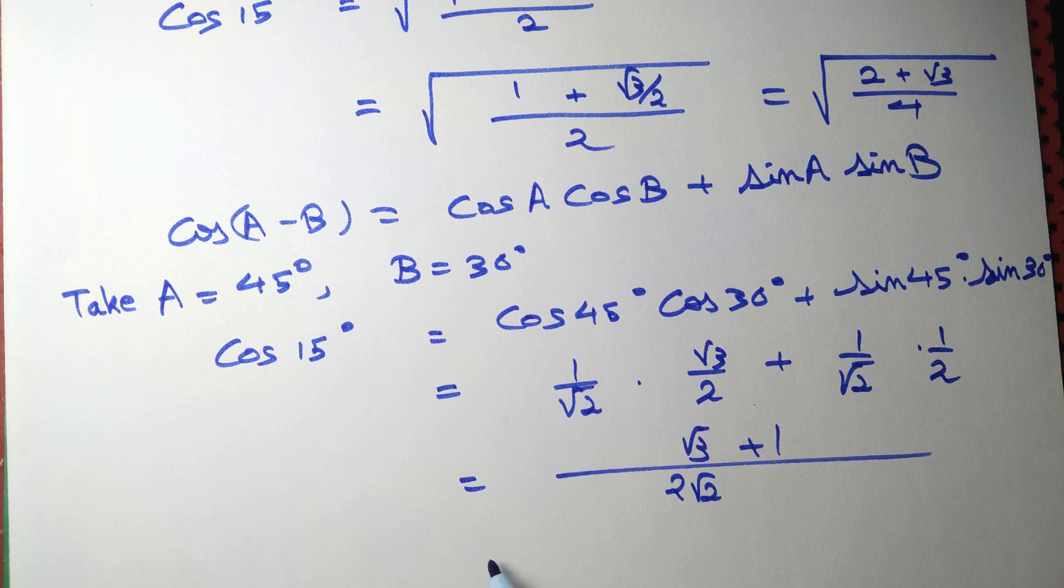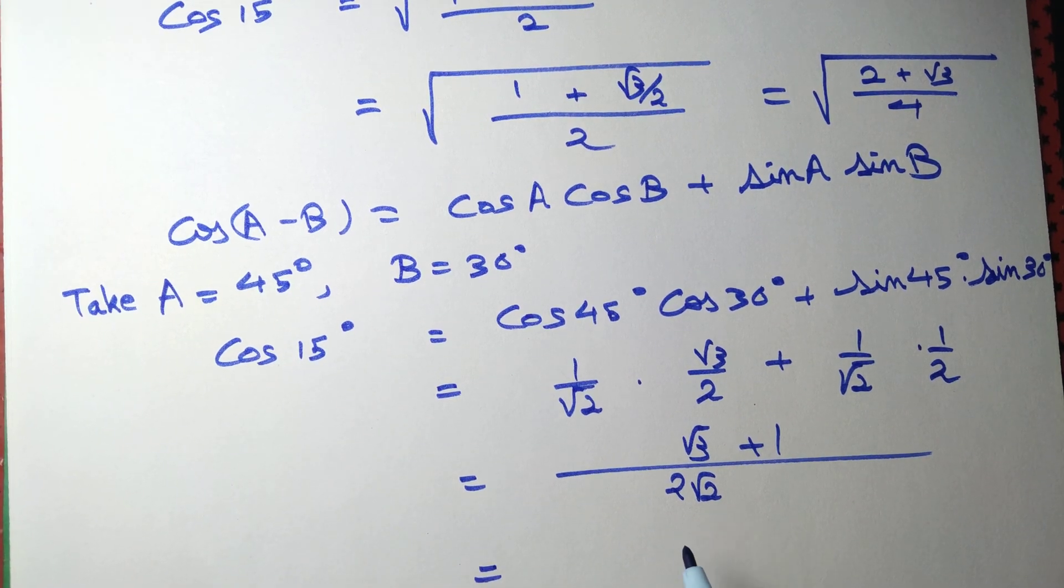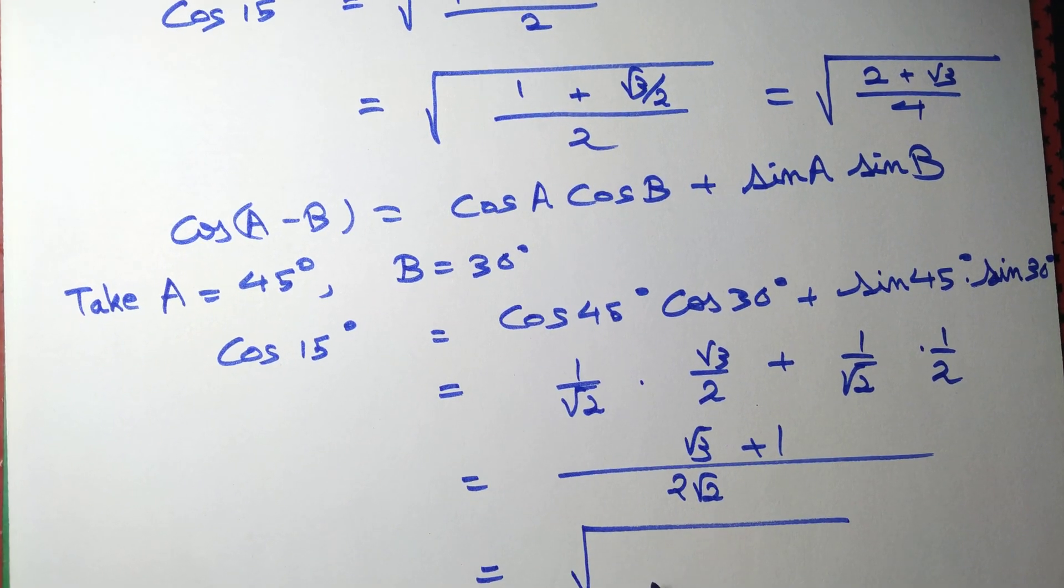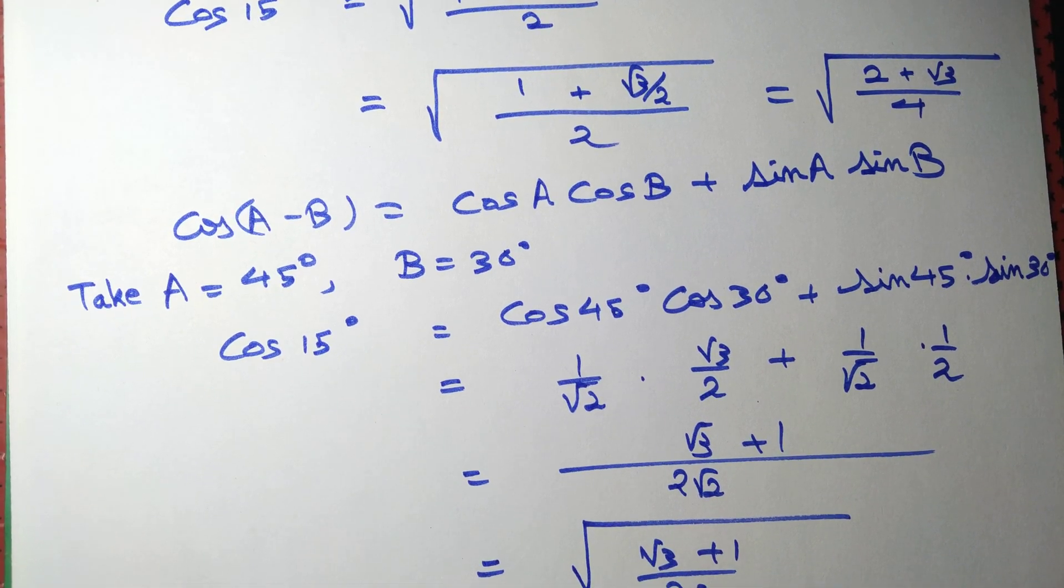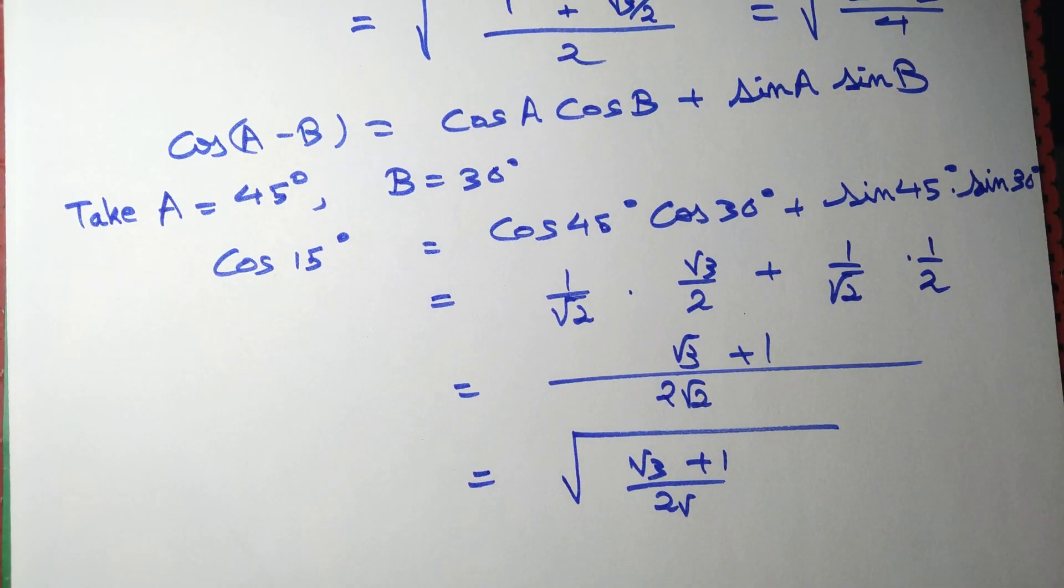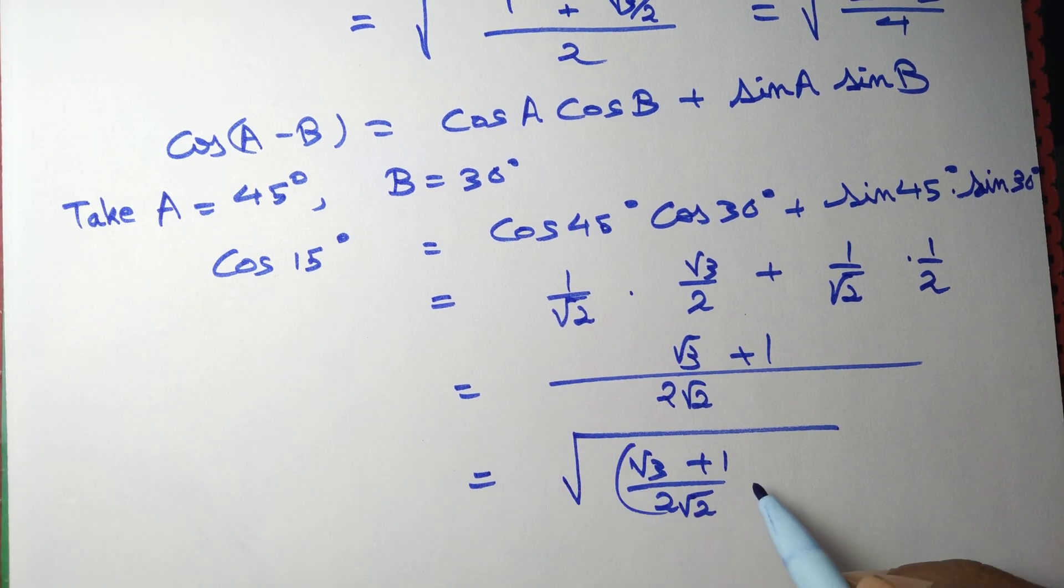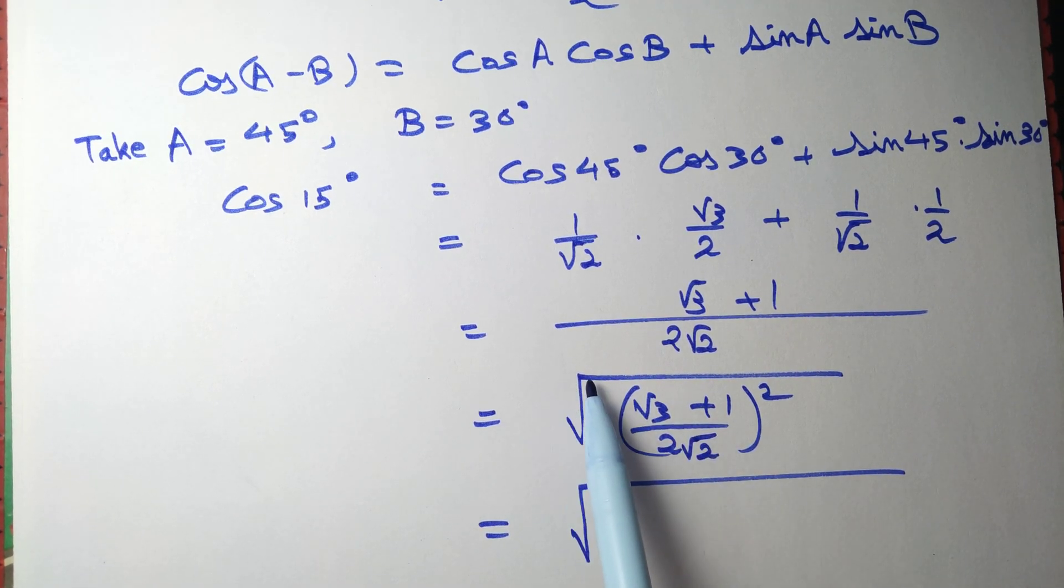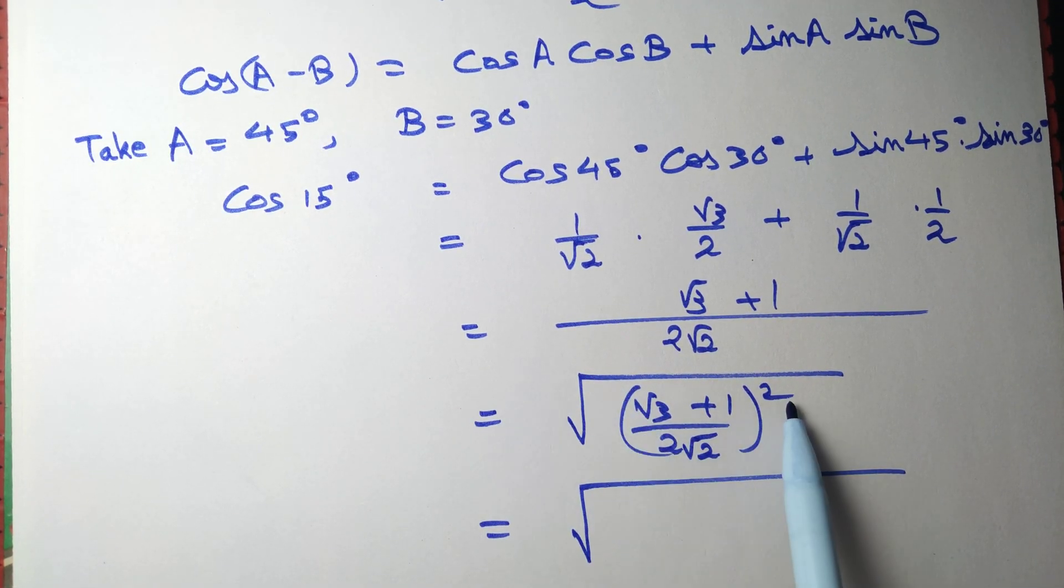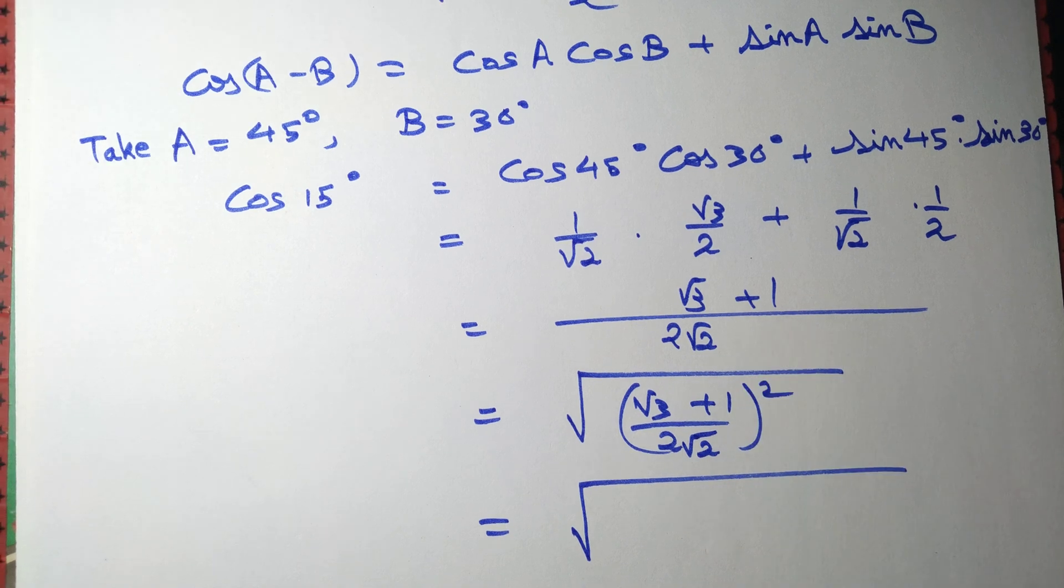How? This can be written as the square root of ((√3+1)/(2√2))². We took the root and then squared it, so the square root and square cancel out, giving us the same number.